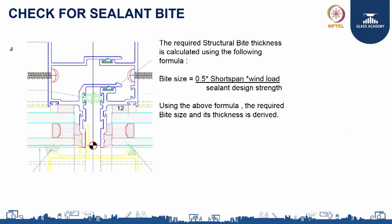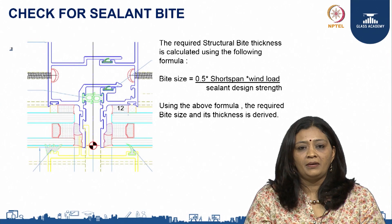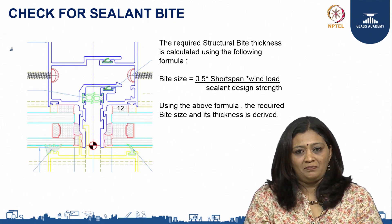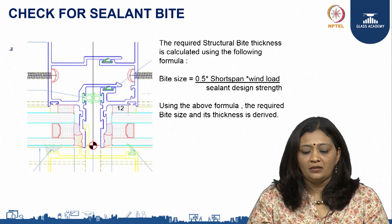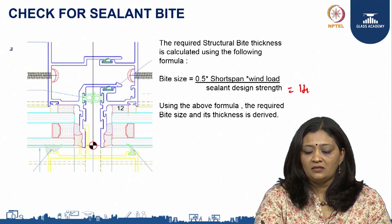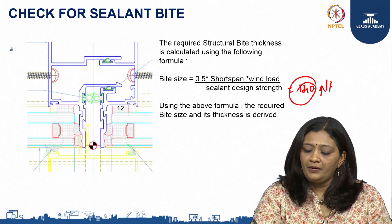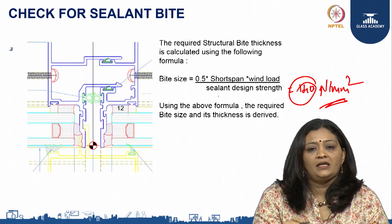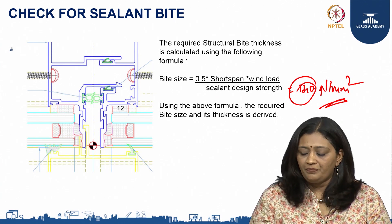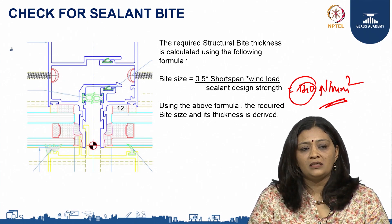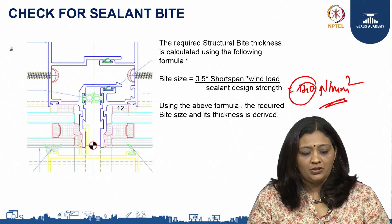Next, let us go to the sealant bite requirement. The sealant bite thickness can be calculated using the formula: 0.5 × short span × wind load ÷ sealant design strength. The sealant design strength is 140 N/mm². Using this formula, we get the bite size required for the panel, which varies from project to project.